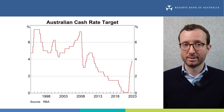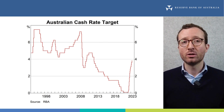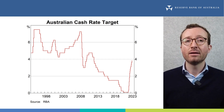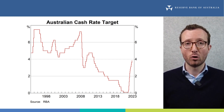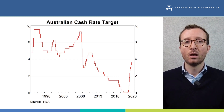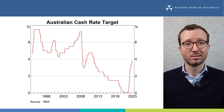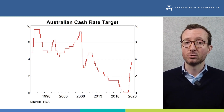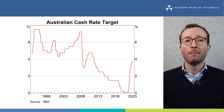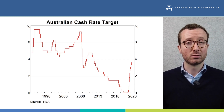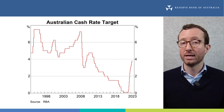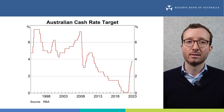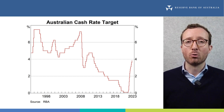Let's now turn to monetary policy. The bank's board has stated that its priority is to return inflation to the 2–3% target range. High inflation makes life difficult for people and damages the function of the economy because it reduces purchasing power and increases uncertainty. And if high inflation were to become entrenched in people's expectations, it would be very costly to reduce later. To achieve this goal, the board has increased the cash rate target considerably since May 2022. Some further tightening of monetary policy may be required to ensure that inflation returns to target in a reasonable timeframe, but that will depend upon how the economy and inflation evolve. In determining future interest rate movements, the board will continue to pay close attention to developments in the global economy, trends in household spending, and the outlook for inflation and the labour market.